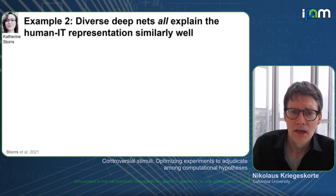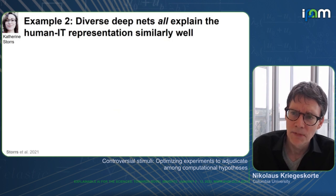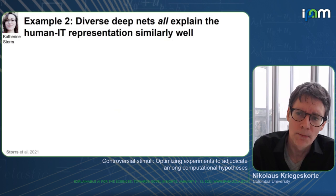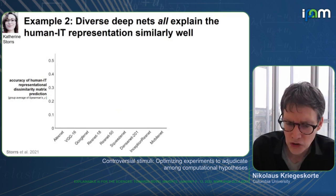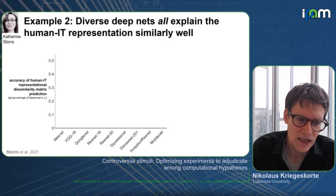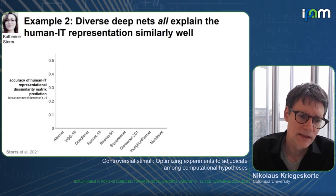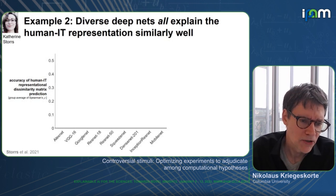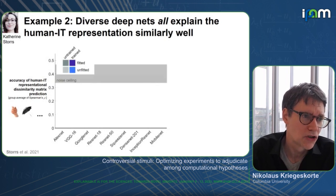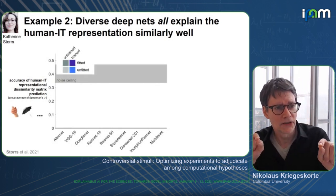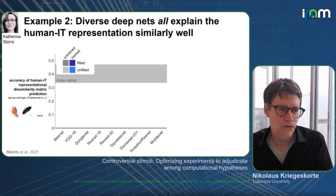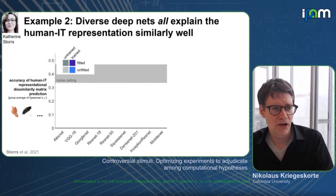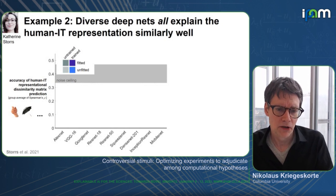Here's another example where Katherine Storrs found that diverse deep net architectures all explain human inferior temporal cortex representation similarly well. Kate used a number of classical computer vision architectures and compared their internal representations to the representational space in human inferior temporal cortex, measured with fMRI, by comparing the representational dissimilarity matrix for a set of object images — a matrix of distances in the multivariate representational space with one distance for every pair of stimuli.